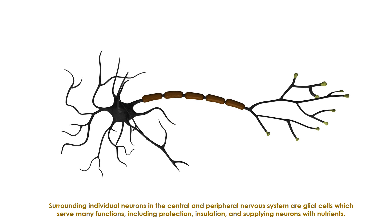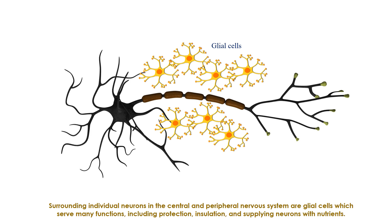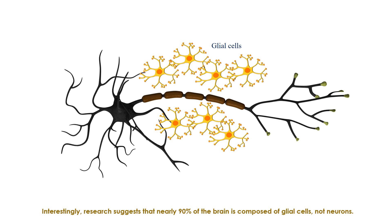Surrounding individual neurons in the central and peripheral nervous system are glial cells, which serve many functions, including protection, insulation, and supplying neurons with nutrients. Interestingly, research suggests that nearly 90% of the brain is composed of glial cells, not neurons.